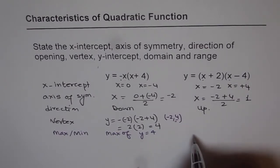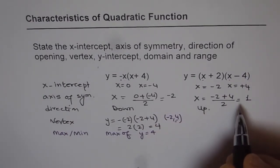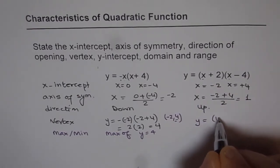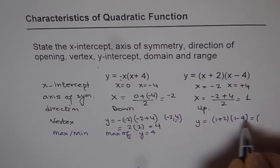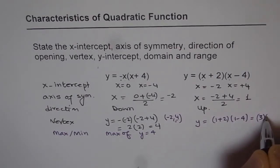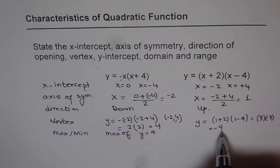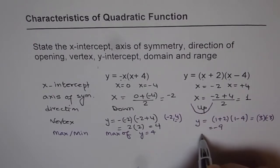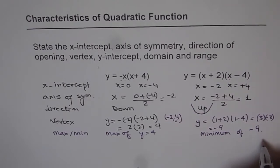Now to find the vertex for the second equation, we will do the same thing. So we will plug in the axis of symmetry x equals to 1 value here and find y. So y equals to 1 plus 2 times 1 minus 4, which gives us 1 plus 2 is 3 and 1 minus 4 is minus 3. So that means minus 9. So we have maximum or minimum value of minus 9. Since this parabola opens up, it has a minimum. So we have a minimum of minus 9 in this case.